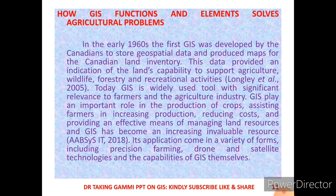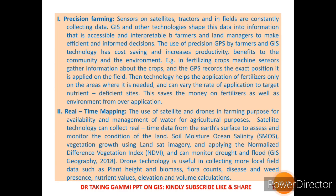GIS applications come in various forms, including precision farming, drone and satellite technologies, and the capabilities of GIS itself. The first application is precision farming. Sensors on satellites and detectors in the field are constantly collecting data. GIS and other technologies save this data into information that is accessible and interpretable by farmers and land managers to make efficient and informed decisions.